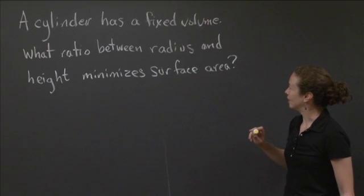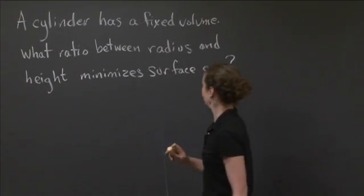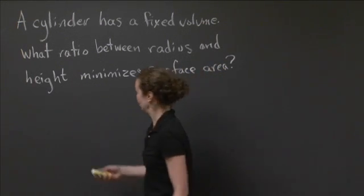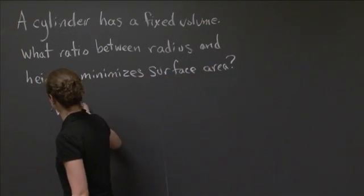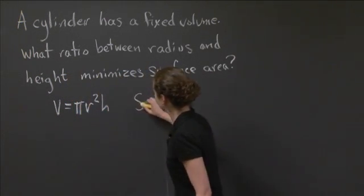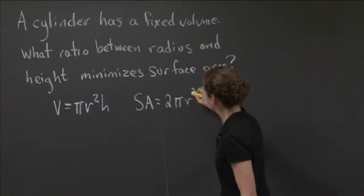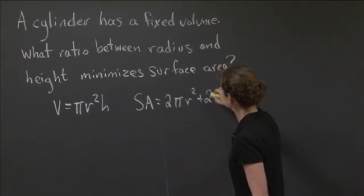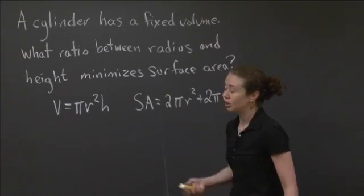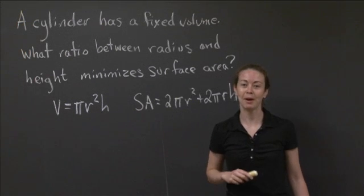Before I give you time to think about that, I'm going to remind you of the two formulas for volume and surface area of a cylinder. So volume of a cylinder is π r² h, and surface area is 2π r² plus 2π r h. So with that information, I'll give you some time to work on this problem, and then I'll be back.